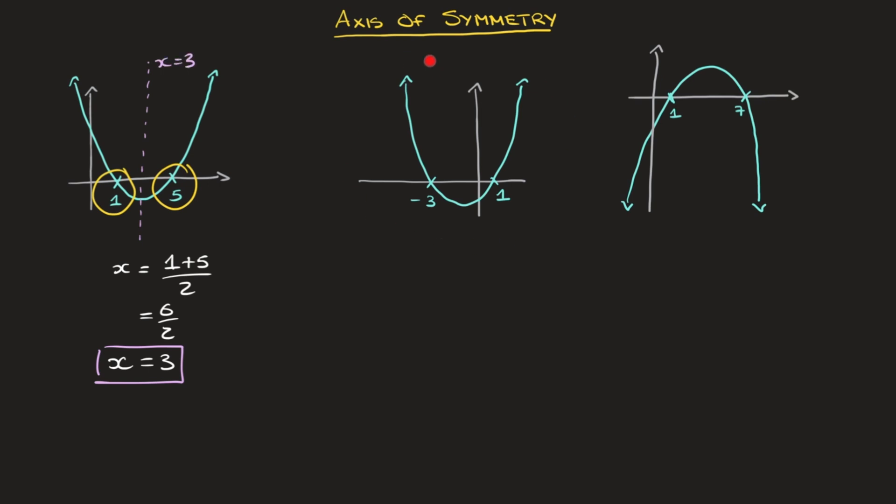Looking at the next parabola, we can see that it crosses the x-axis at -3 and at 1. Using the same method, the axis of symmetry has equation x = (-3 + 1)/2, which leads us to -2/2. Finally, x = -1. I'll box that result and label the axis of symmetry x = -1. Looking at one more example here,